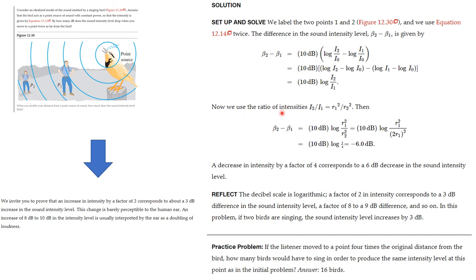But now, we're going to use the ratio of intensities that i1 over i2 is the same thing as r1 squared over r2 squared. That means we have 10 dB and we have these logarithms here of r1 squared divided by r2 squared. But we know that r2 is twice r1, so we put that in. Now, if you look at this, you see that the r1 squareds cancel and this ends up being the logarithm of 1 over 4. So, 10 dB times the log of 1 over 4, you pound this into your calculator and you get minus 6.0 dB. So, a decrease in intensity by a factor of 4 corresponds to a 6 dB decrease in the sound intensity level.